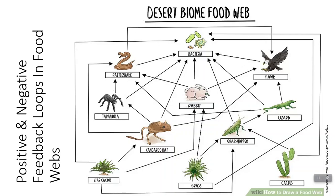Here's an example of a desert biome food web, and what we're going to look at is what happens when you affect the populations. Let's say some disease came in and wiped out all of the star cactus. Anything that eats it would tend to have a decrease in population, so kangaroo rats as well as rabbits would decrease. If there are less kangaroo rats, then anything that eats the kangaroo rat — rattlesnakes, tarantulas, and hawks — will also decrease. Anything that eats the rabbit, meaning the rattlesnake and the hawk, which are the top predators, will also decrease. Notice the bacteria are decomposers eating from everything. Removing an organism or changing its population can have a wide impact in a food web.